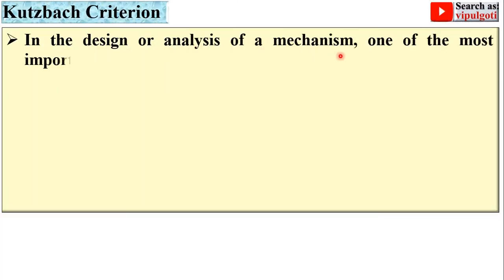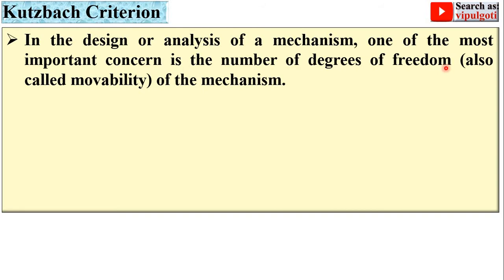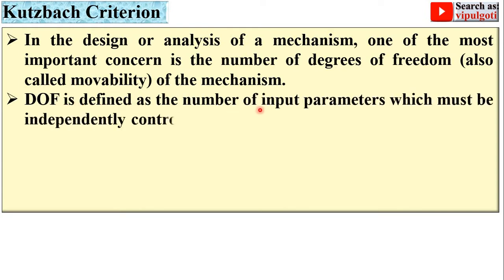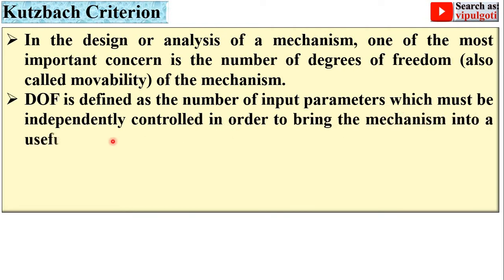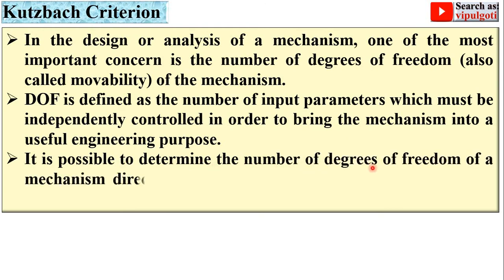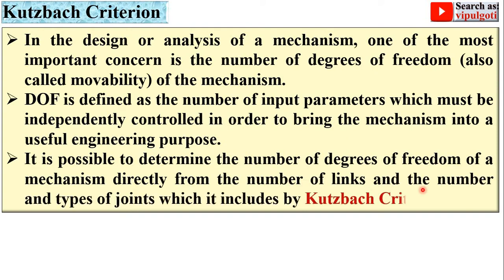In the design or analysis of a mechanism, one of the most important concerns is the number of degrees of freedom, also called the movability of the mechanism. Degree of freedom is defined as the number of input parameters which must be independently controlled in order to bring the mechanism into a useful engineering purpose. It is possible to determine the number of degrees of freedom of a mechanism directly from the number of links and the number and types of joints by the Kutzbach criterion.